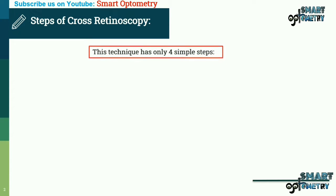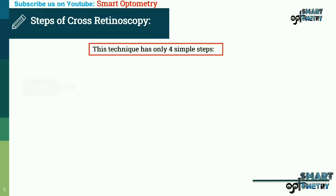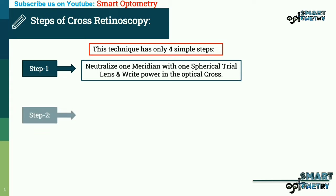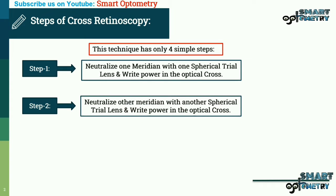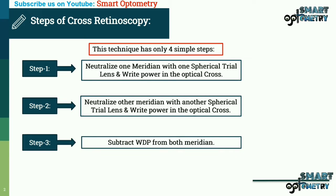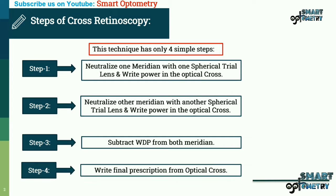In this technique, there are only 4 simple steps. Step 1: Neutralize one meridian with one spherical trial lens and write the power in the optical cross. Step 2: Neutralize the other meridian with another spherical trial lens and write the power in the optical cross. Step 3: Subtract working distance power from both meridians. Step 4: Write the final prescription from the optical cross.